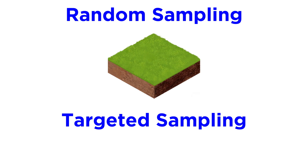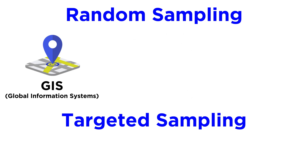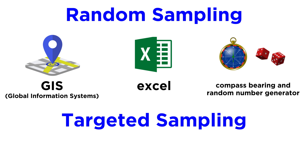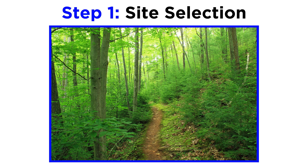In random sampling, plots are randomly selected to represent a forest type using either Geographic Information Systems (GIS), Excel, or a compass bearing and random number generator. In targeted sampling, the researcher looks for specific conditions and chooses areas best suited to answering the research question. Regardless of the method, plots are generally chosen before entering the field to reduce researcher bias.